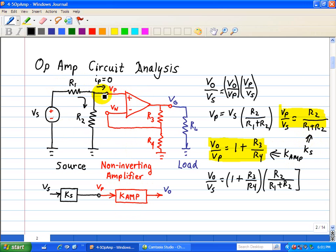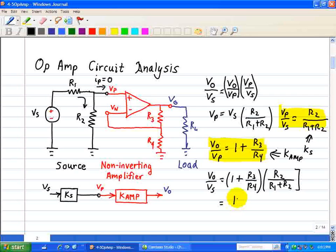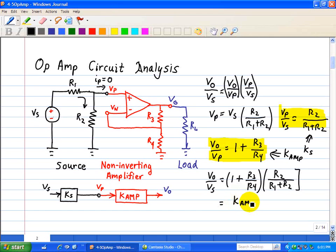And then to get the relationship between Vs and V0, we multiply these two diagrams here, these block diagrams, Ks times Kamp. In other words, V0 over Vs is just simply the product. This is Kamp in this case, and then this term is Ks, to get the relationship between V0 over Vs.